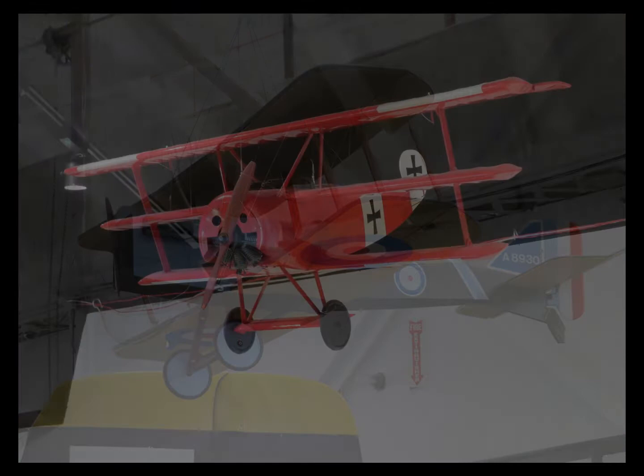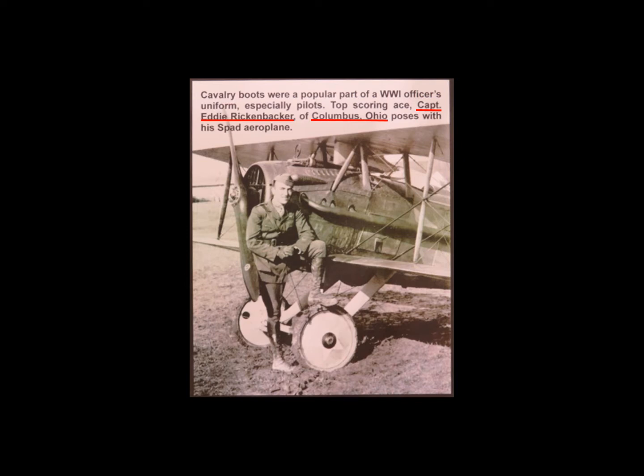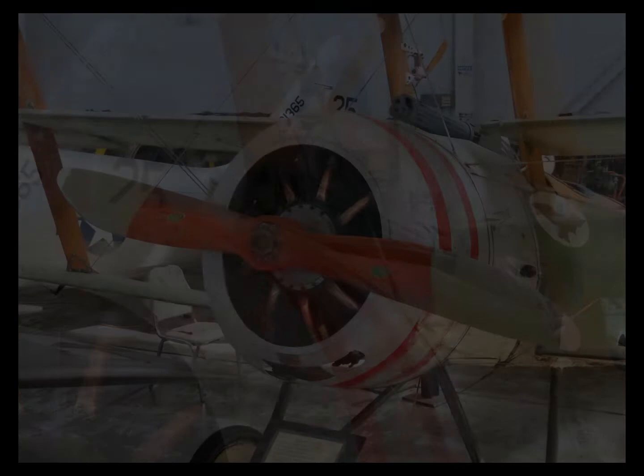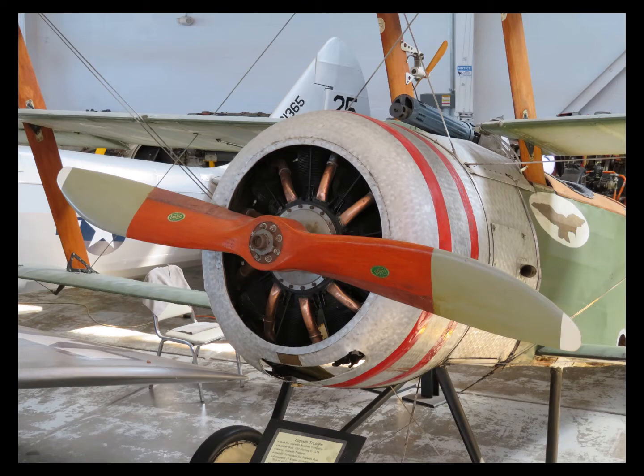World War I was the first major conflict to harness the power of the aircraft. At the dawn of World War I, aviation was a relatively new field — the Wright brothers took their first sustained flight just 11 years before in 1903. Aircraft were initially used primarily for reconnaissance missions. The first machine guns were successfully mounted on planes in June of 1912 in the United States, but were imperfect. If timed incorrectly, the bullet could easily destroy the propeller of the plane it came from. By war's end, the Allies were producing five times more aircraft than the Germans.